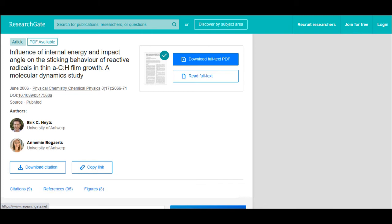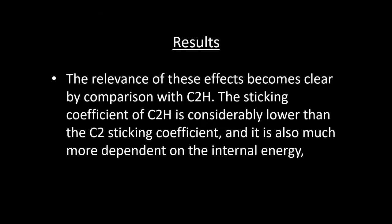From the results: the sticking coefficient of C2H is considerably lower than the sticking coefficient of C2, and it's also much more dependent on internal energy, varying from nearly 0.8 to about 0.5 for an internal energy between 0.026 and 2.6 eV respectively. Indeed, while in C2 both C atoms can react with the surface, the C2H radical will stick to the surface virtually always with the C atom that is not carrying the H atom — the other C atom is shielded by the H atom.